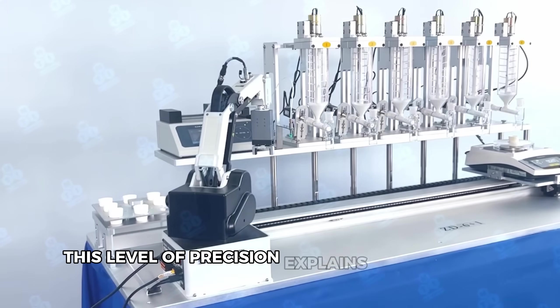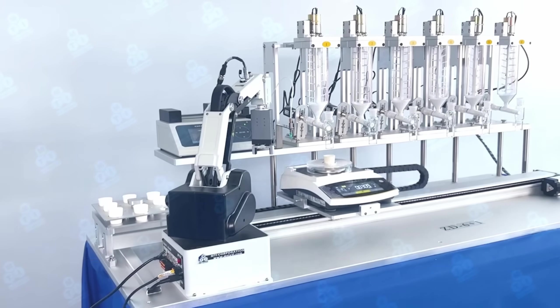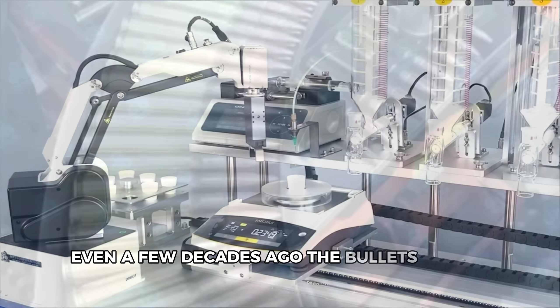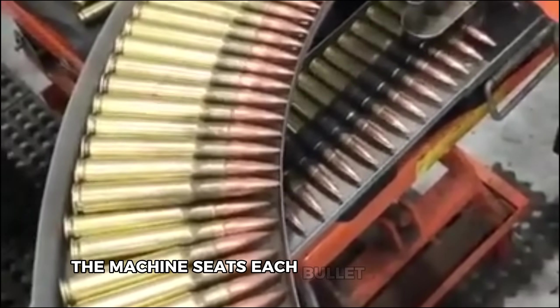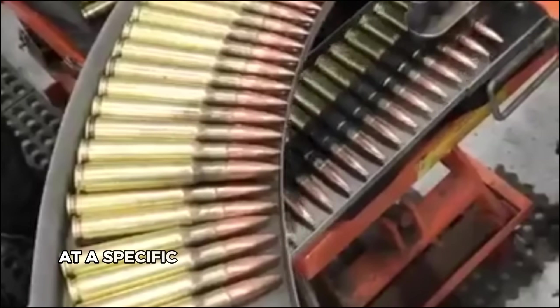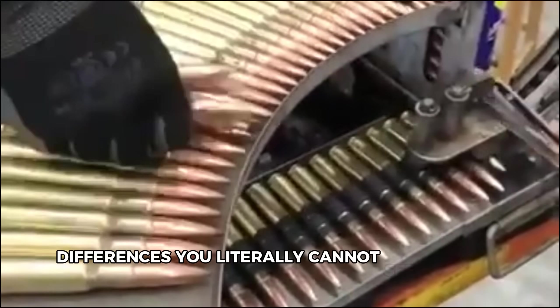This level of precision explains why modern ammunition is so much more consistent than what was produced even a few decades ago. The bullets are up next in this choreographed process. The machine seats each bullet into its case at a specific depth measured in thousandths of an inch, differences you literally cannot see with the naked eye.